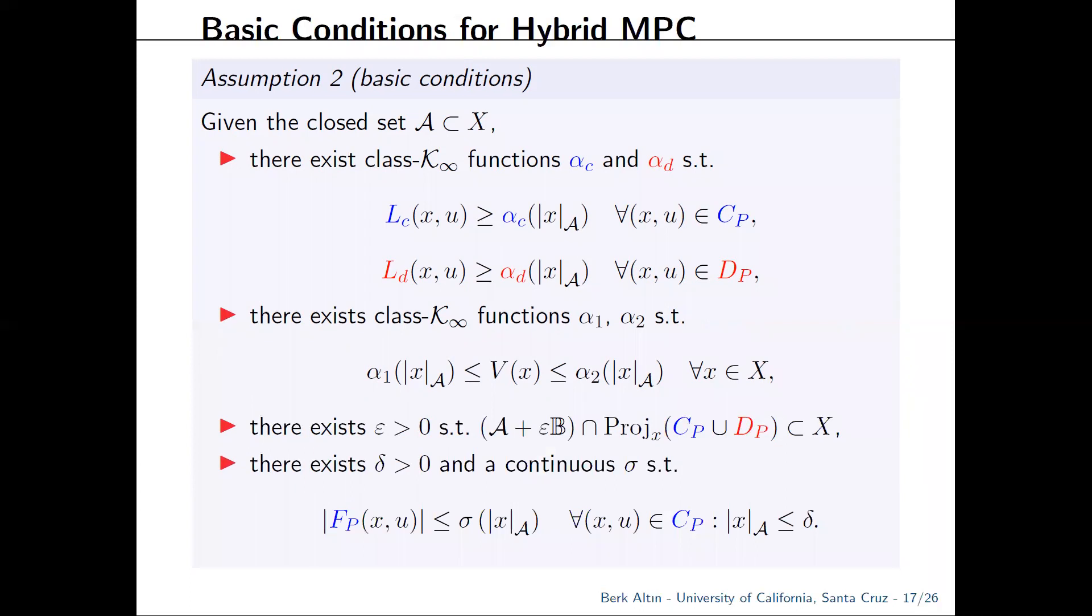And the final assumption is that the flow map should be bounded by a continuous function so that essentially you have finite actuation and can rule out infinitely fast convergence to target set A. This one looks a bit esoteric, but it holds under standard regularity assumptions.